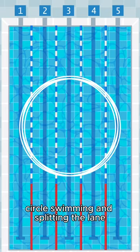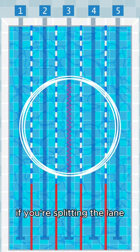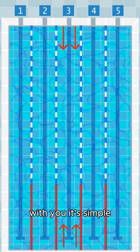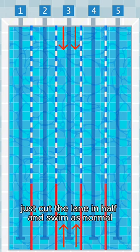There are two types of swimming: circle swimming and splitting the lane. If you're splitting the lane, there's likely only you and one other person in the lane. It's simple - just cut the lane in half and swim as normal.